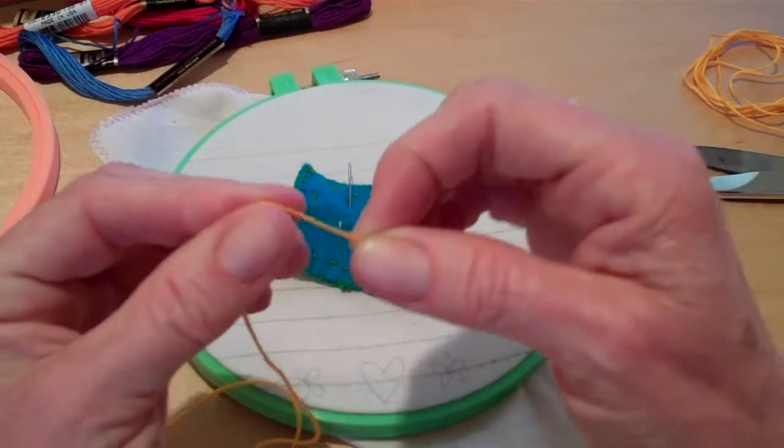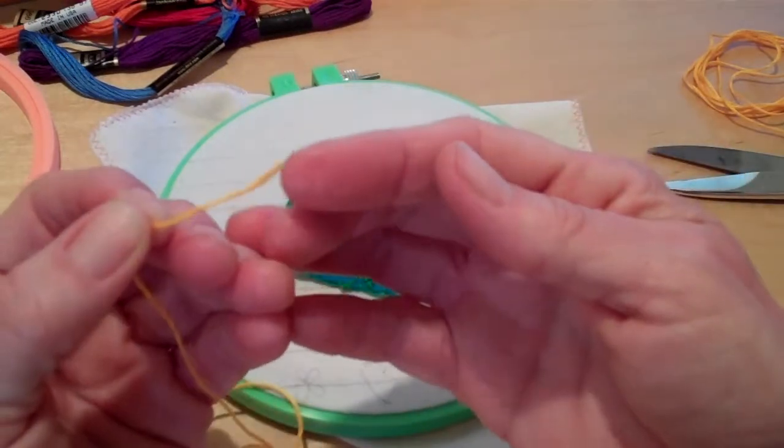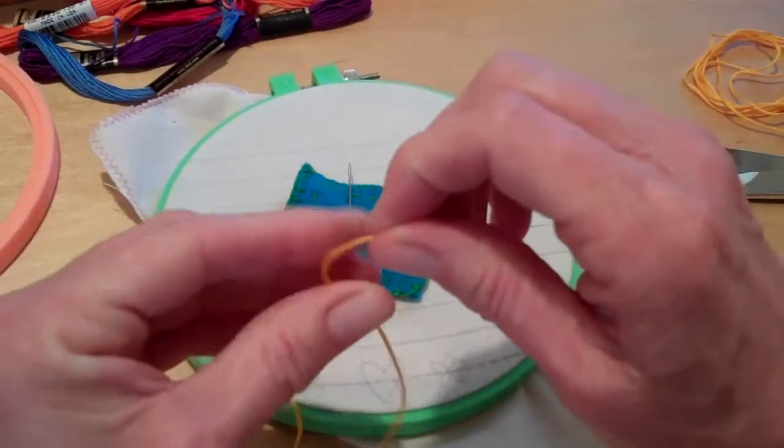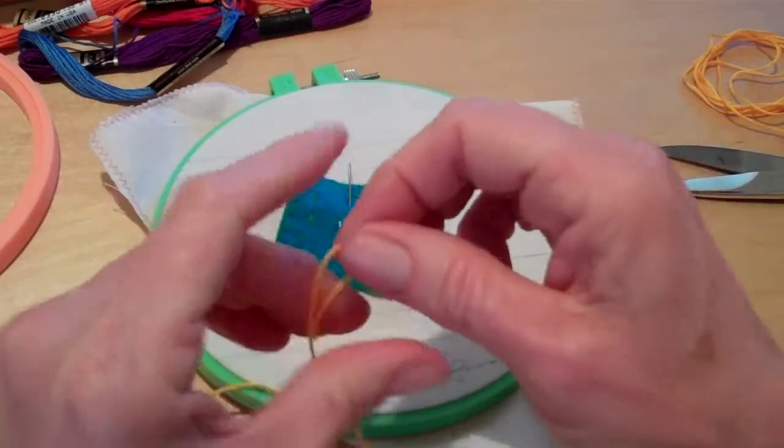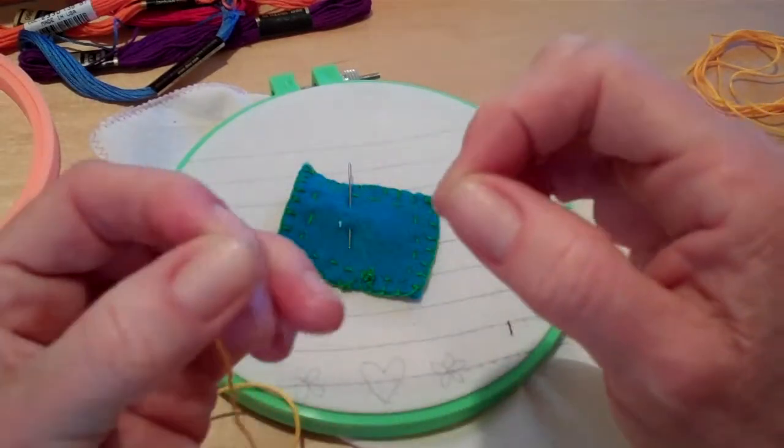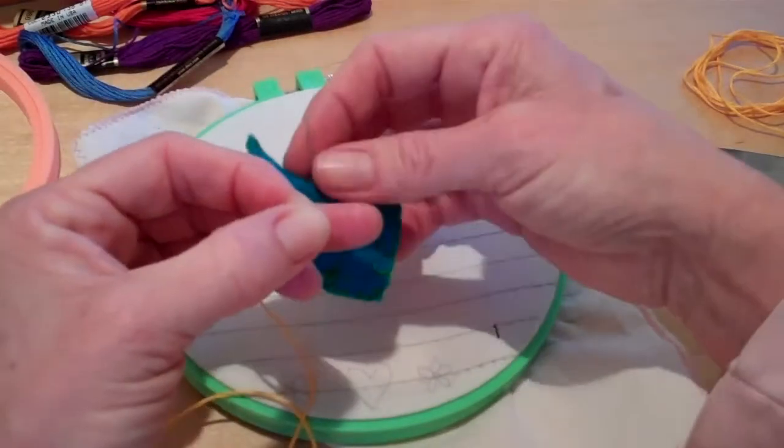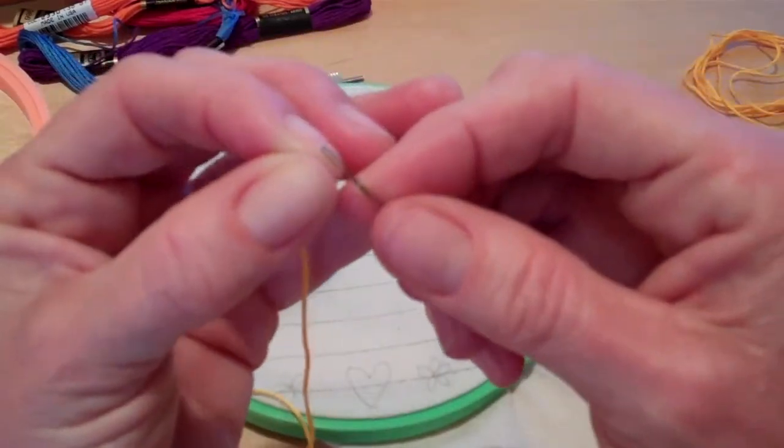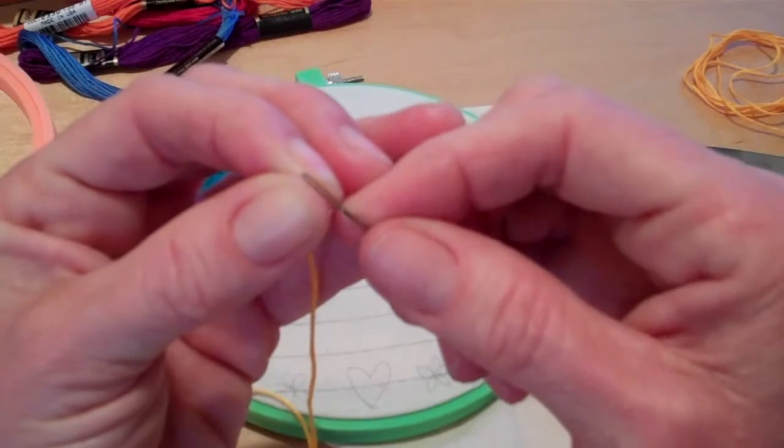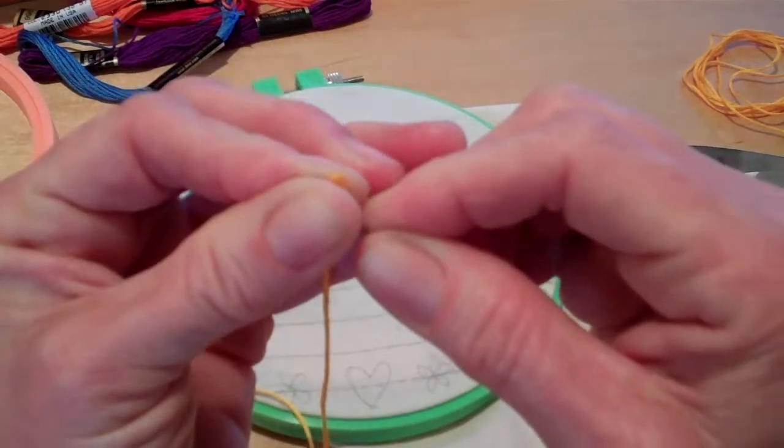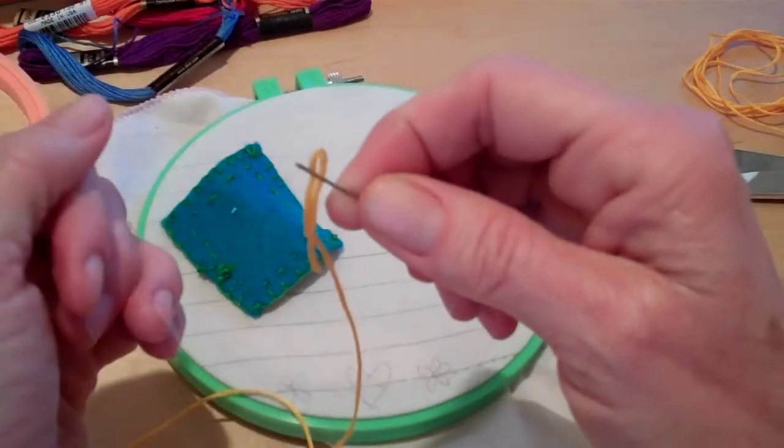To thread the needle, fold. Since you have all these different strands here, a technique is to fold it in half, make a loop, and then I press it flat between my finger and my thumb. Take the eye of my embroidery needle right to where it is and then simply push that loop through.